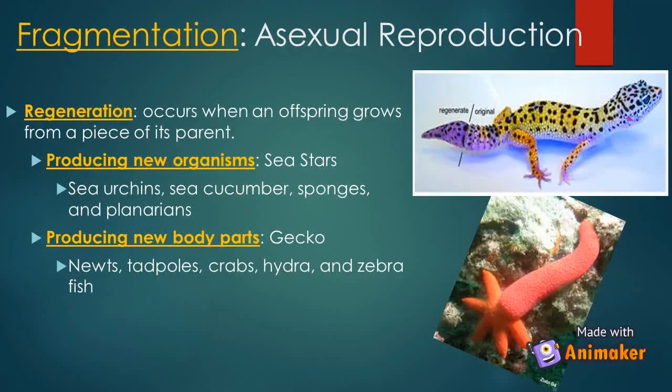Fragmentation reproduction is a physical split of the organism into segments, and these segments develop into new organisms. Examples are worms, echinoderms, sponges, and starfish.